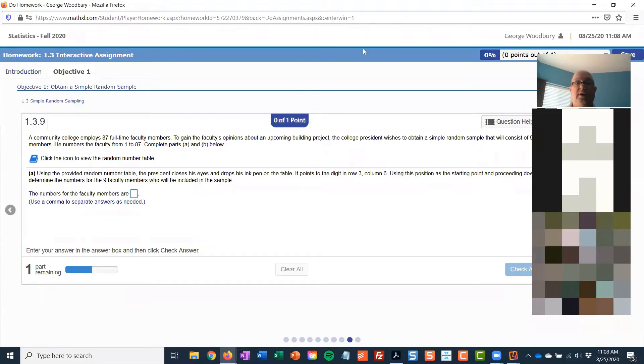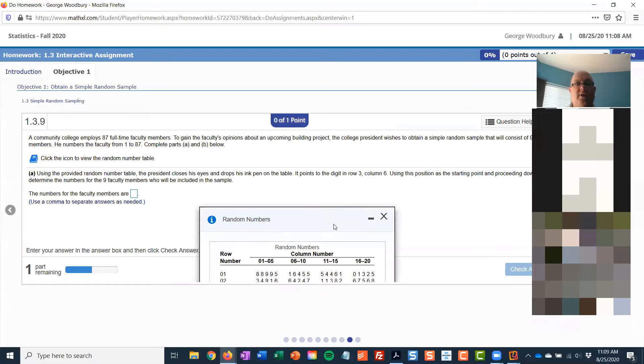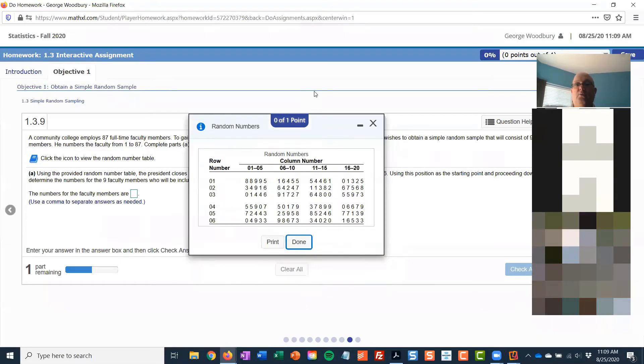The first way they do it in problem A is using this random number table. I'm going to click on it to open it, and it's just a table of random digits. It tells me where to start—it points to the digit in row three, column six. Rows go across, columns like the columns on a building go up and down. So row three, column six is this number nine.